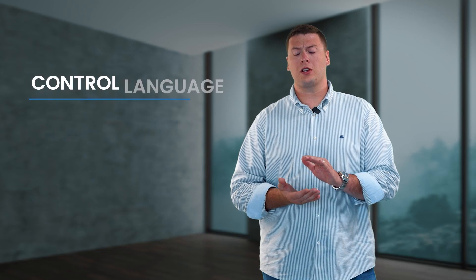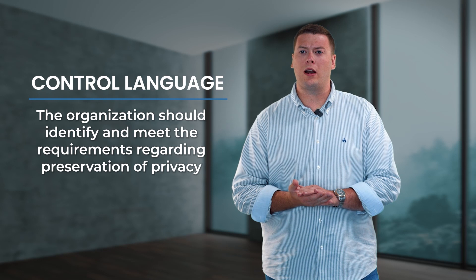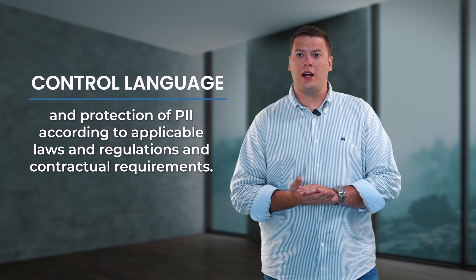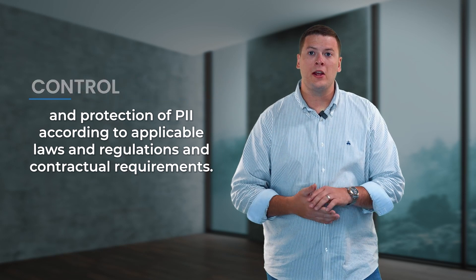The next control is 5.34, Privacy and Protection of PII. The control states the organization should identify and meet the requirements regarding preservation of privacy and protection of PII according to applicable laws, regulations, and contractual requirements. Many organizations are finding themselves beholden to regulations such as CPRA, GDPR, and many other local privacy regulations. ISO simply wants to know that you have determined what those are and are applying the necessary controls within your ISMS. If you want a more robust privacy management system, I'd recommend checking out ISO 27701, which is strictly focused on the privacy of information.